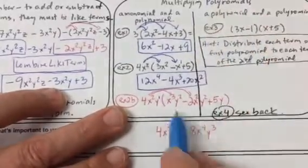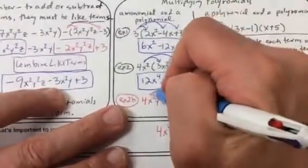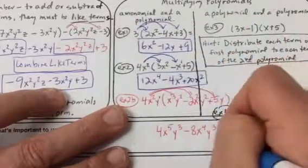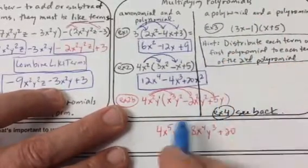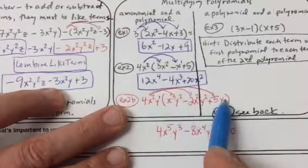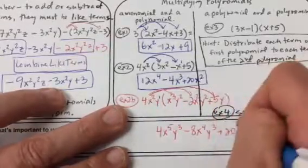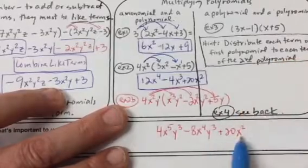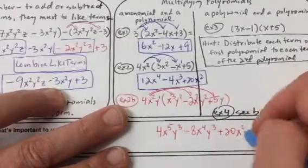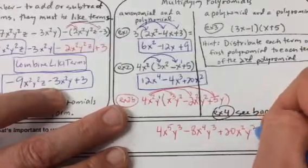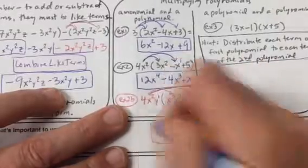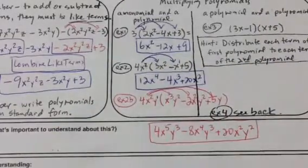One part at a time. Now let's go back here to the 5y and multiply it. 4 times 5 is 20. Now this one doesn't have an x, but I want you to go ahead and keep your variables in alphabetical order. So let's bring the x squared that was in the front, still comes over here. Then we have our y times y. y times y is y squared. And there you go for that part.